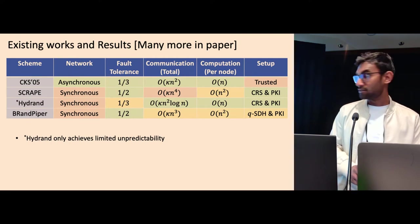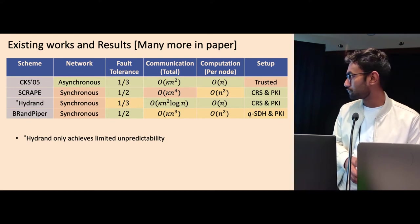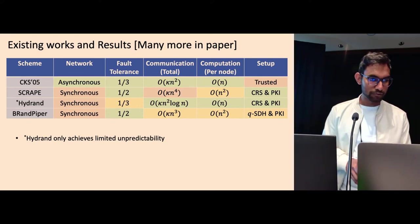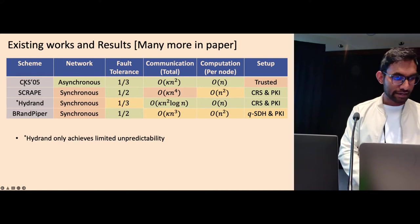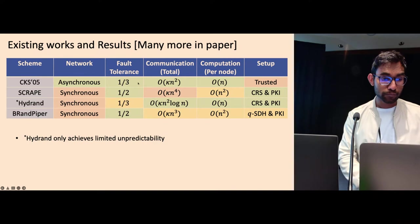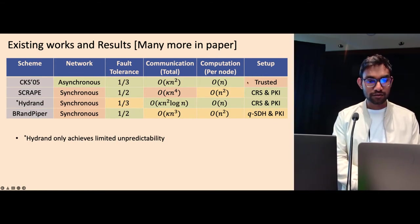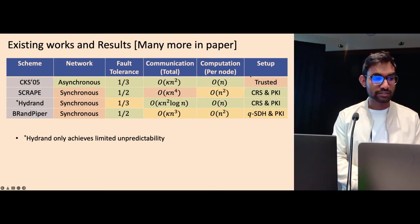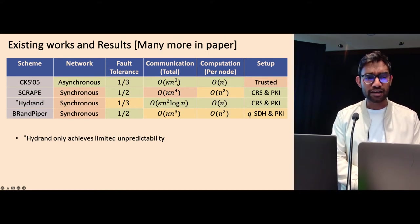The Randomness Beacon has been looked at for a while, and it has a lot of work, so we only summarized a few of those. So here we only look at CKS 05, which is an asynchronous Randomness Beacon protocol that has lots of good properties, like optimal fault tolerance, has communication cost of kappa n square, where kappa is the security parameter, but the downside of this protocol is that this requires a trusted setup. We have other protocols such as scrape, which are in synchrony, but they have very high communication cost.